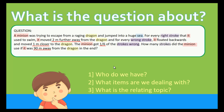So after getting a brief idea of what the whole question is about, we also need to find out what question we are going to solve. We can do this by reading the last sentence of the problem. The last sentence reads: 'How many strokes did the minion use if it was 90 meters away from the dragon in the end?' So now we know we are supposed to find the number of strokes. You can pause the video and try the question yourself, or follow along — it's your call.